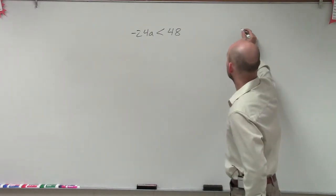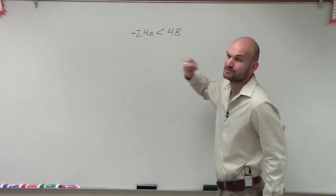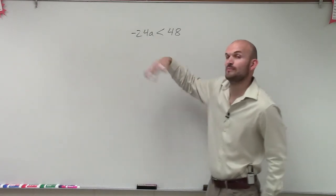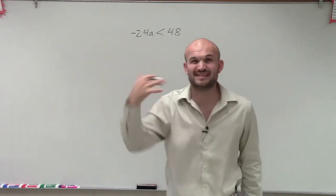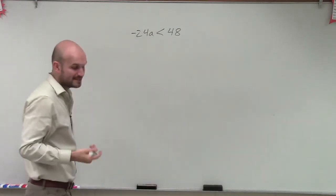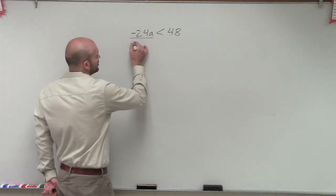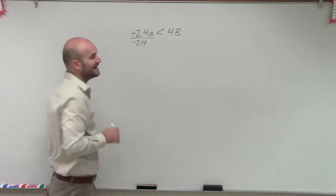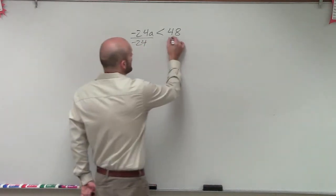But when we look at something, we're going to now have to use our inverse operation. So since my variable, remember when solving inequality, just like solving equation, we need to isolate the variable. So right now, my variable is being multiplied by negative 24. So to undo multiplication of a negative 24, I need to divide by negative 24 on both sides.